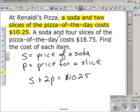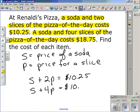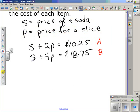The next sentence gives us another equation, a soda and four slices of pizza costs $18.75. So we can write a second equation, a soda plus four slices of pizza is equal to $18.75. As we did in the previous lesson or video on systems of equations, I think it's best that we label them A and B so it's easy to solve them.